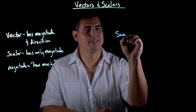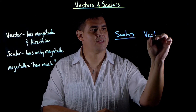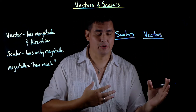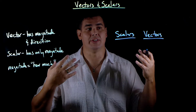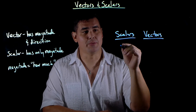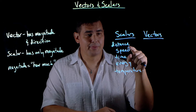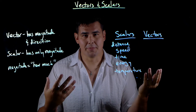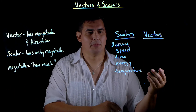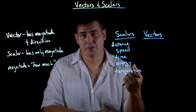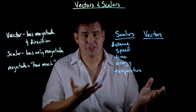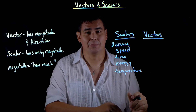Let's look at some examples of scalars and vectors, because you have to be able to differentiate them — the type of math you use differs based on what you're measuring. Scalars include distance, speed, time, energy, and temperature. Time is a scalar because there's no such thing as east time or west time. Energy is a scalar — there's no direction to energy. Temperature is a scalar too — there's no direction to temperature.